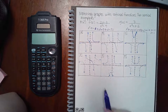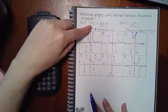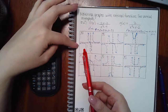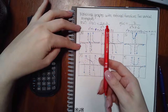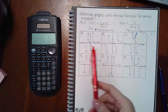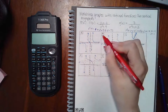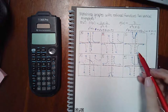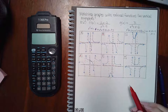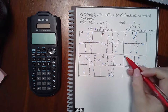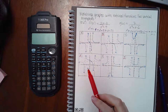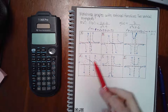For f(x) we're looking at vertical asymptotes at negative 3 and 3. So B could be a contender, D could be a contender, and F could be a contender.